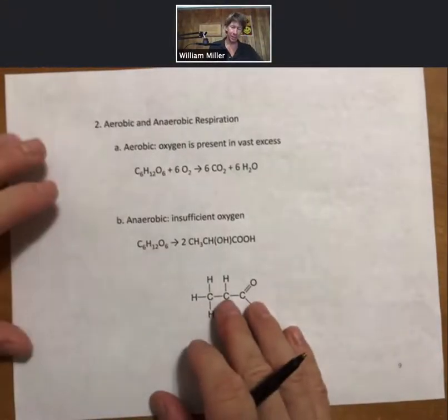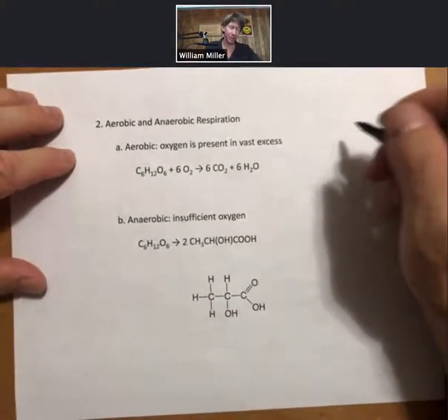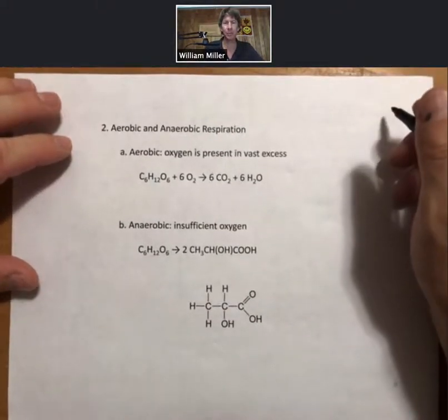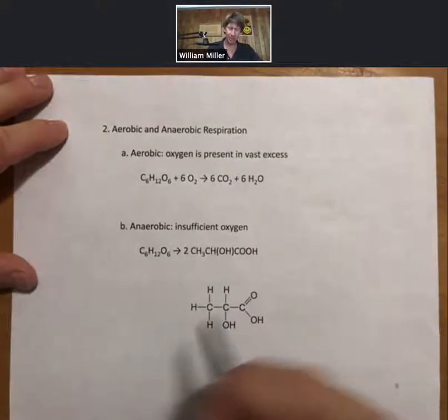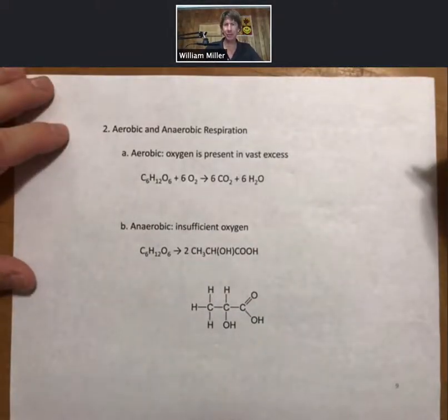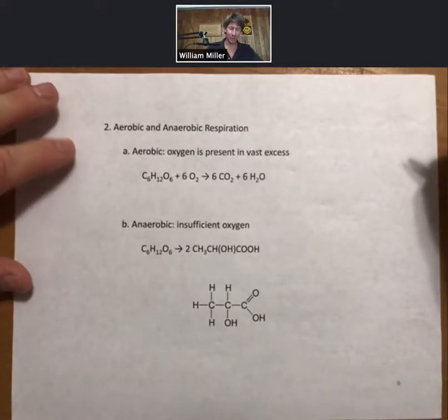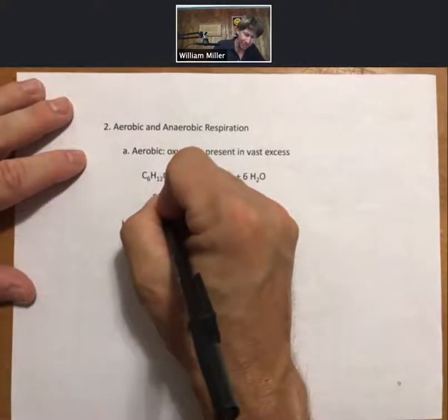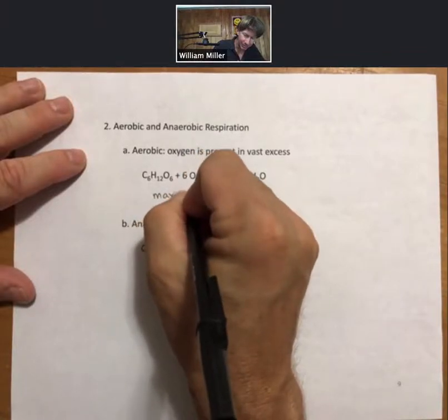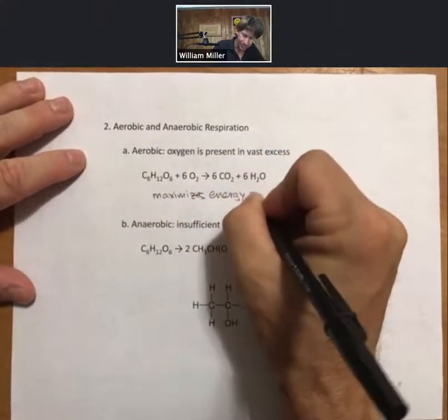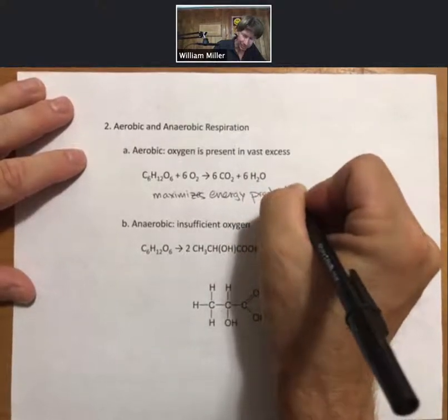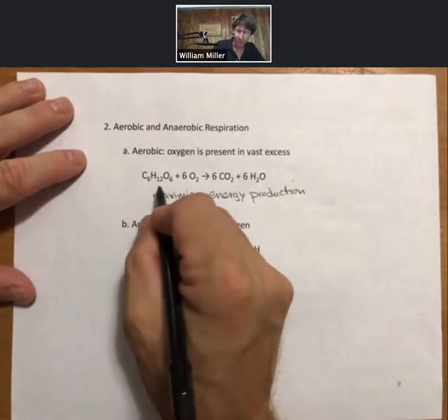Other examples: we'll be talking about aerobic and anaerobic respiration. Aerobic respiration: oxygen is present in vast excess, and so this maximizes energy production from glucose, in this case.